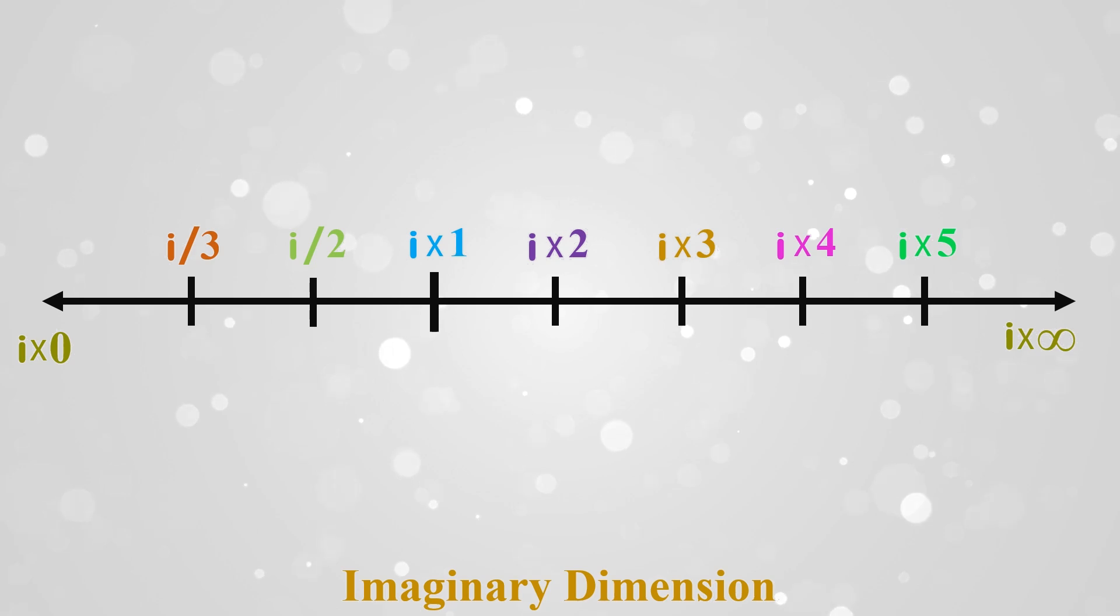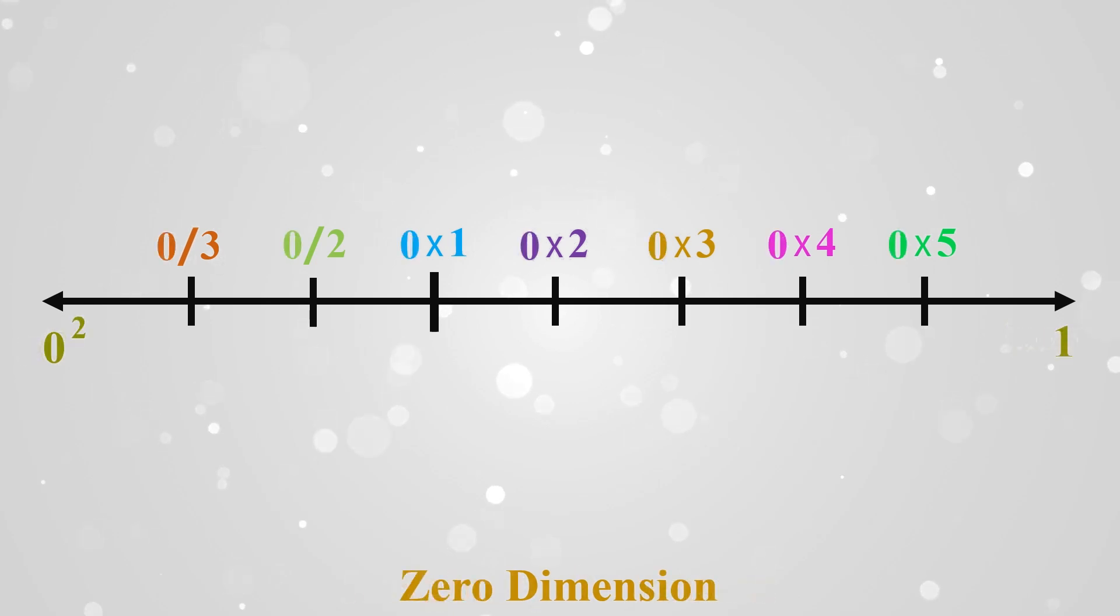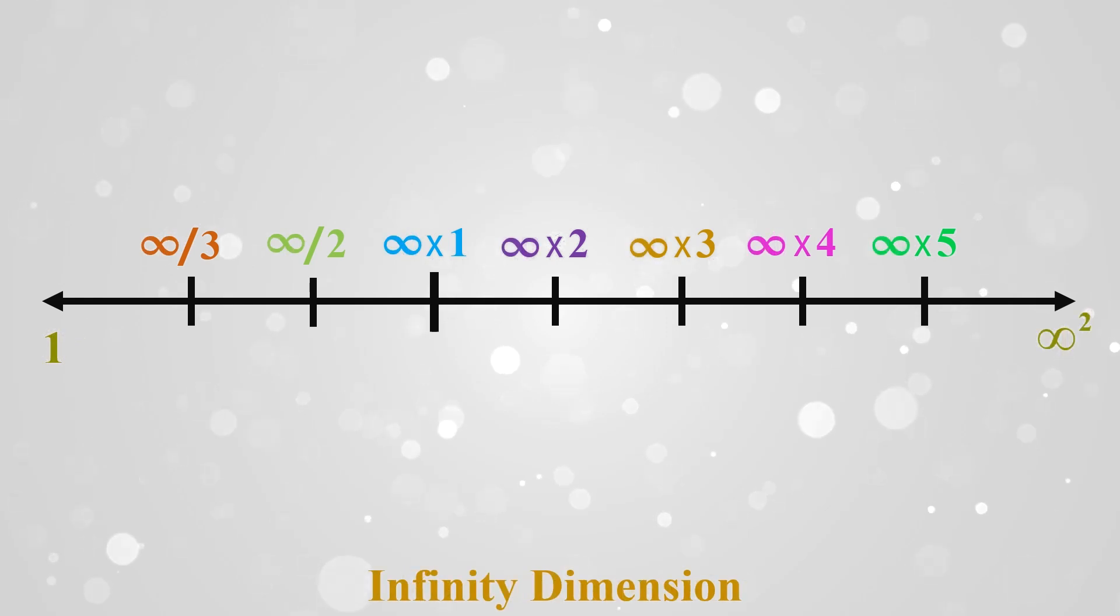Similarly i times 1, i times 2, i times 3 is regular imaginary number line that is named as imaginary dimension. And similarly 0 times 1, 0 times 2, 0 times 3 is also a number line named as 0 dimension. And infinity times 1, infinity times 2, infinity times 3 is also a number line named as infinity dimension.